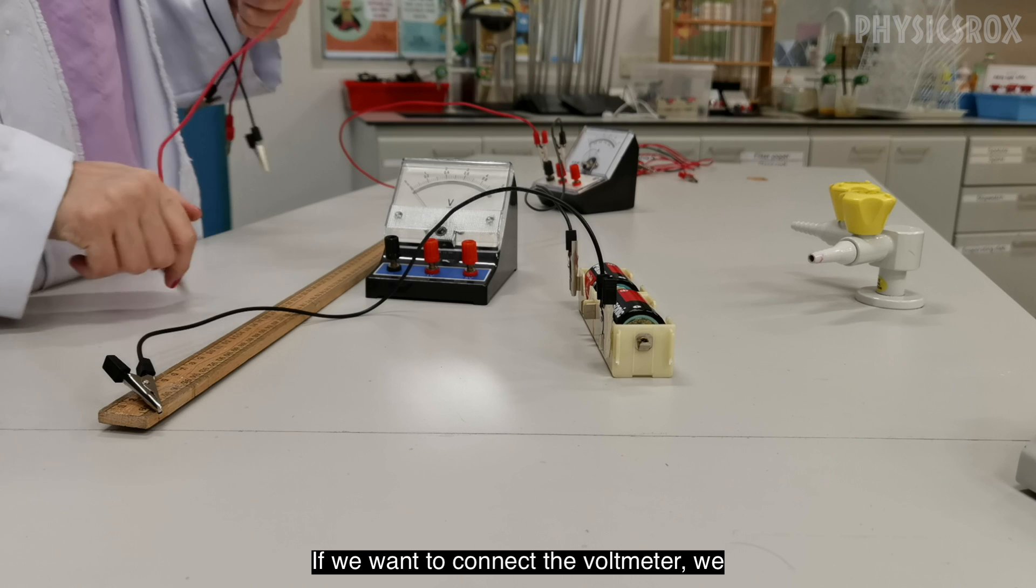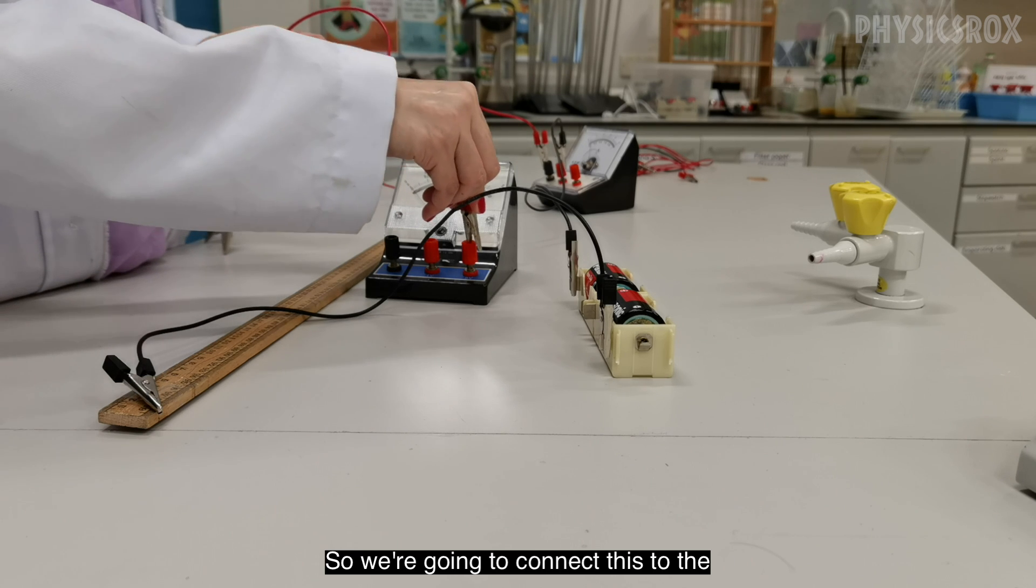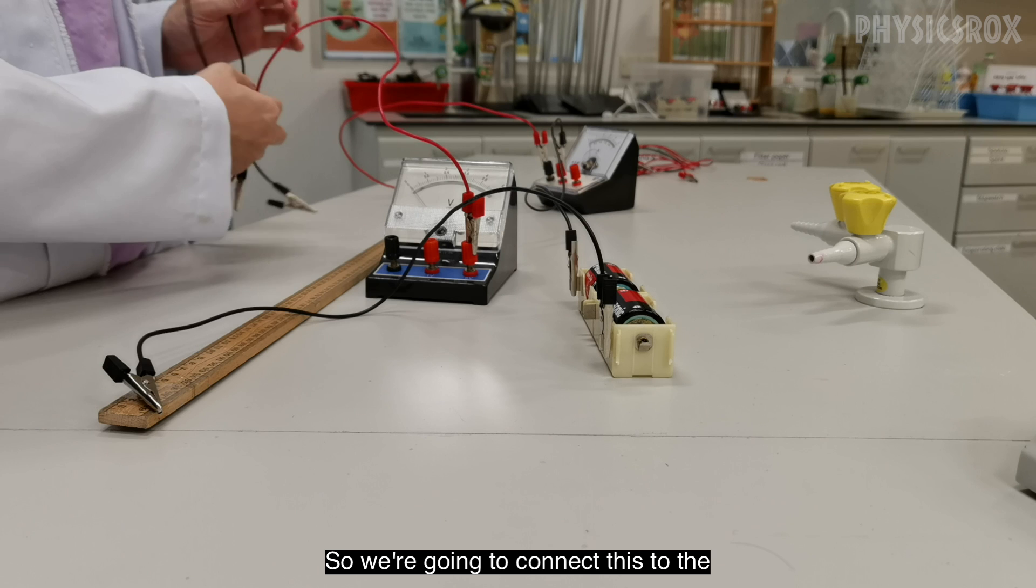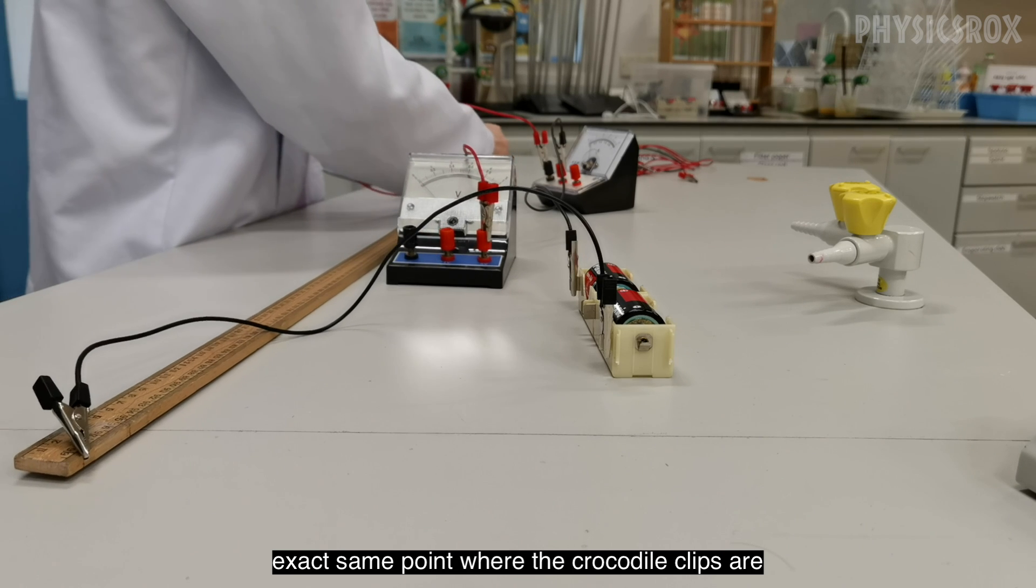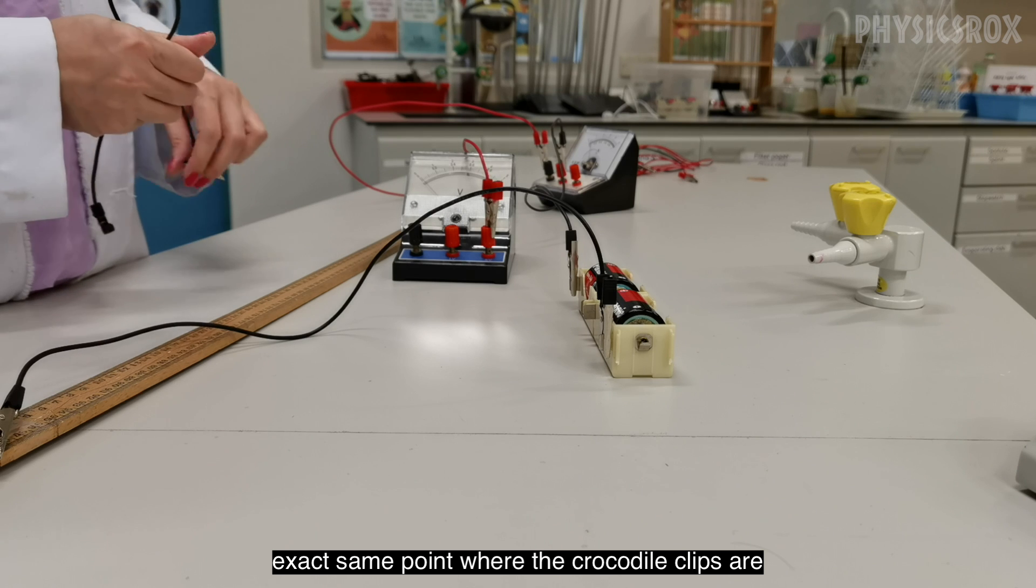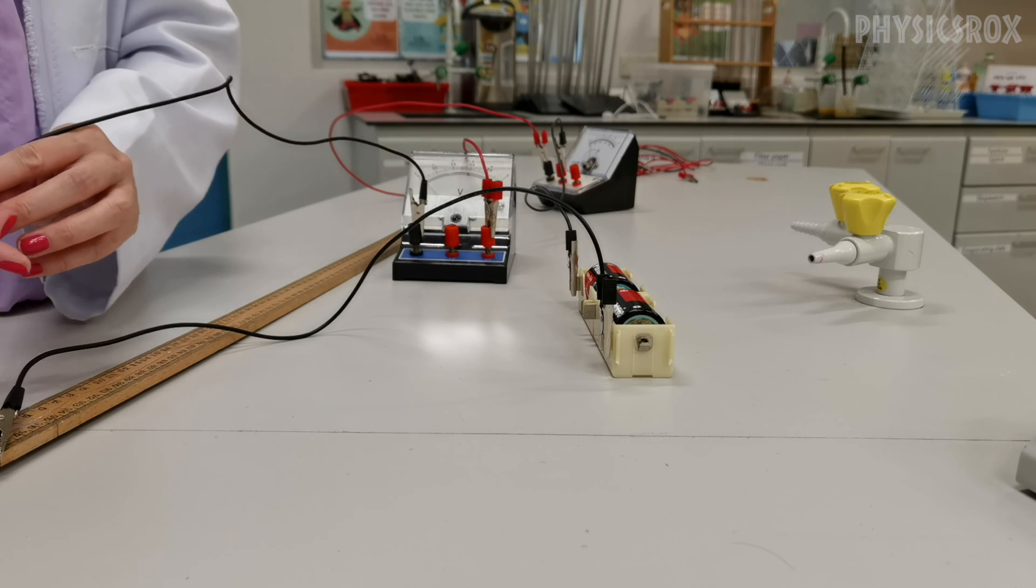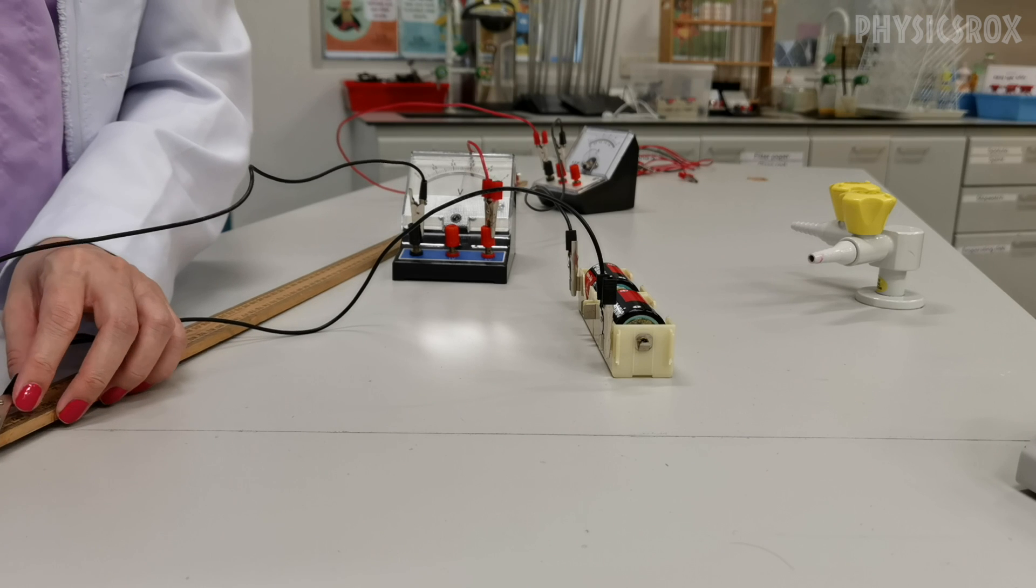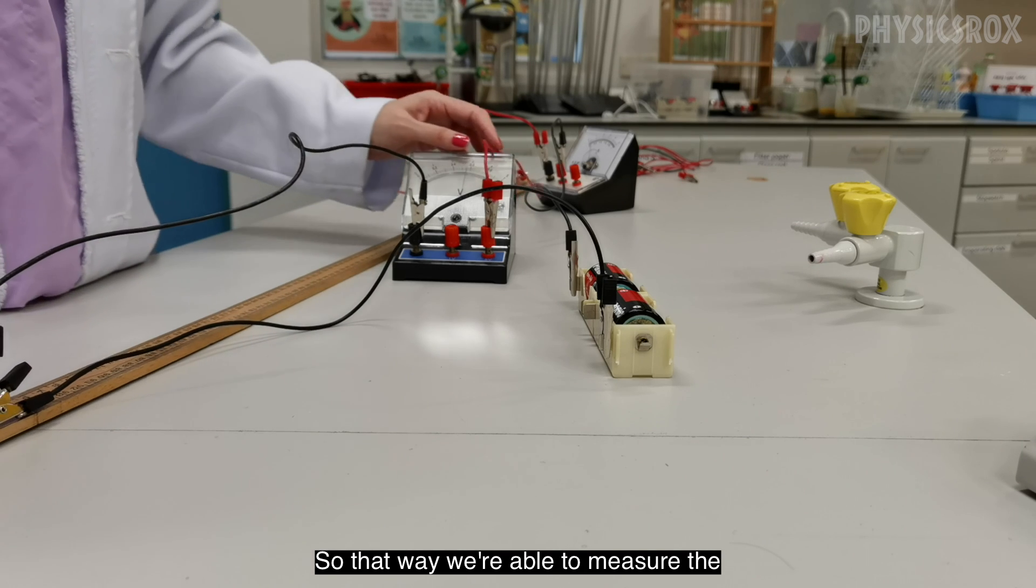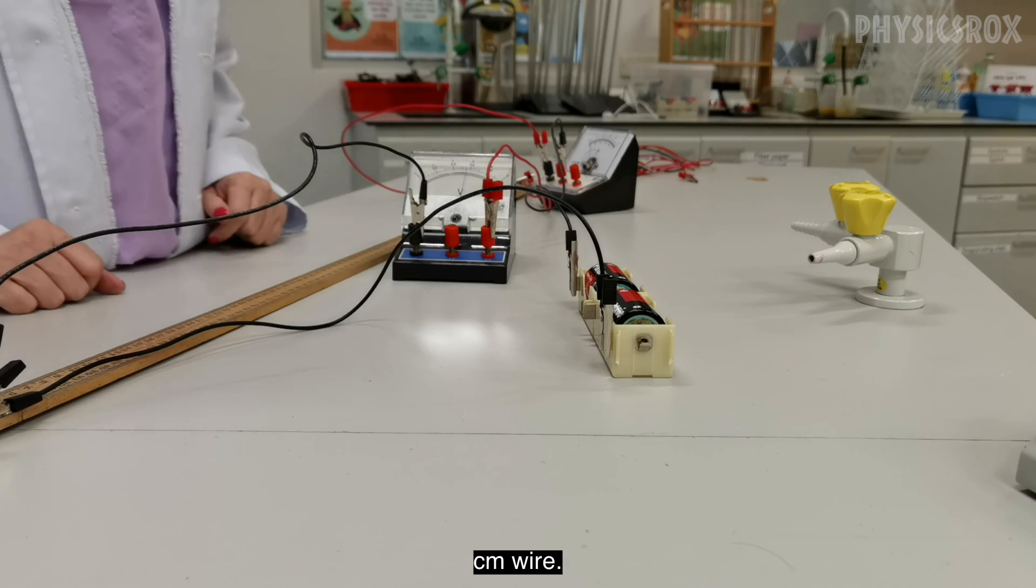If we want to connect the voltmeter, we need to connect the voltmeter in parallel. So we're going to connect this to the exact same point where the crocodile clips are clipping onto the wire. So that way we're able to measure the potential difference or the voltage across the 100 cm wire.